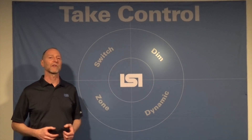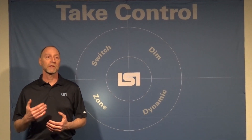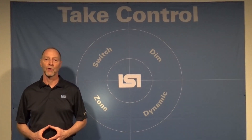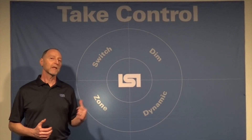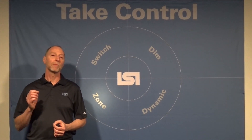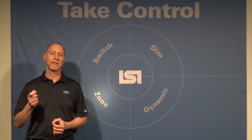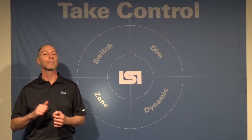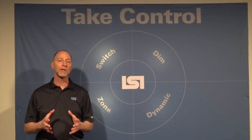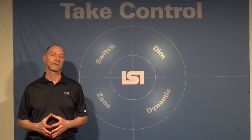So now let's move on to zones. Especially if you're considering using 0 to 10 volt for setting up different zones of control, we can do that very easily with our control track system. In fact, one of the things that we've built into the control track is the ability to take individual fixtures and set them to zone A or set them to zone B, so that you can control two different zones off of the same track system.